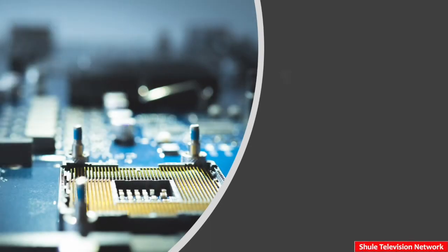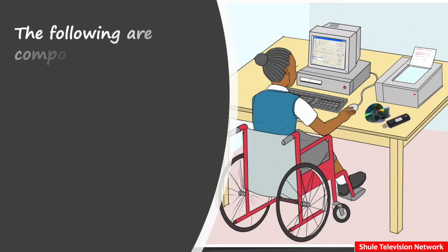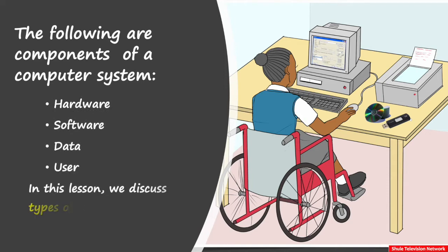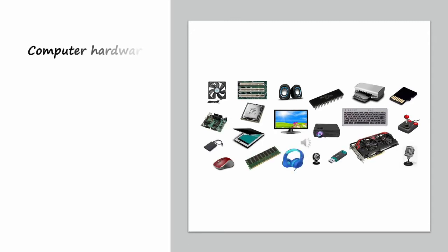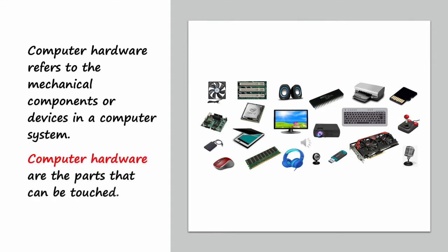In this lesson, we discuss types of computer hardware. The following are components of your computer system: hardware, software, data, and user. Computer hardware refers to the mechanical components or devices in a computer system. Computer hardware are the parts that can be touched.